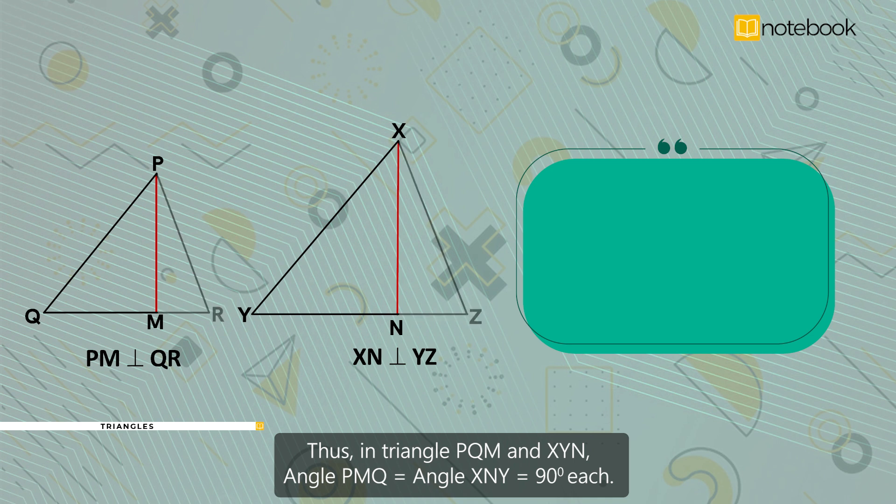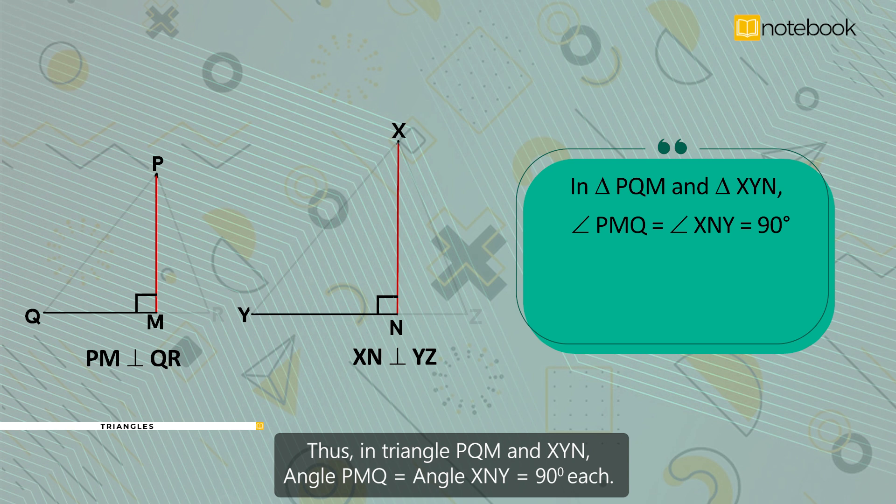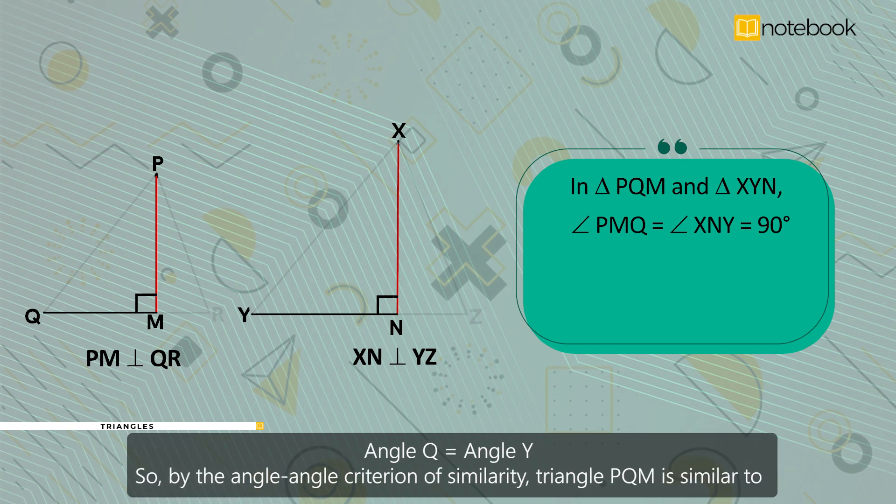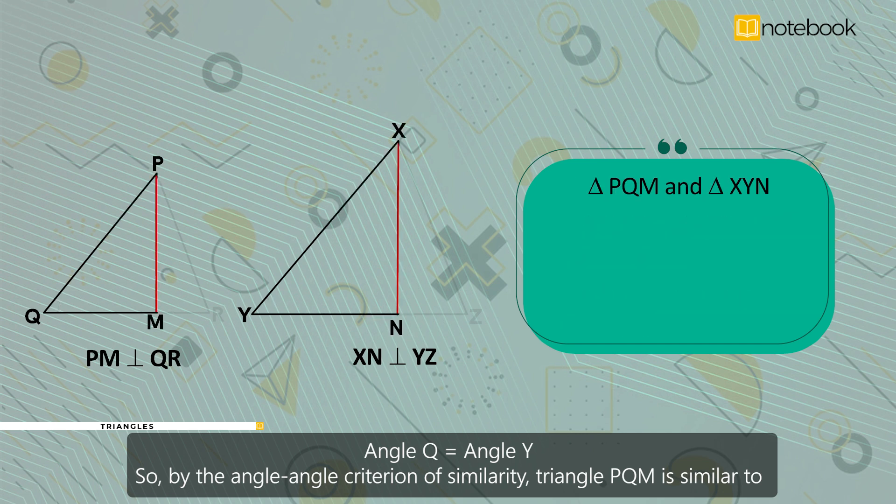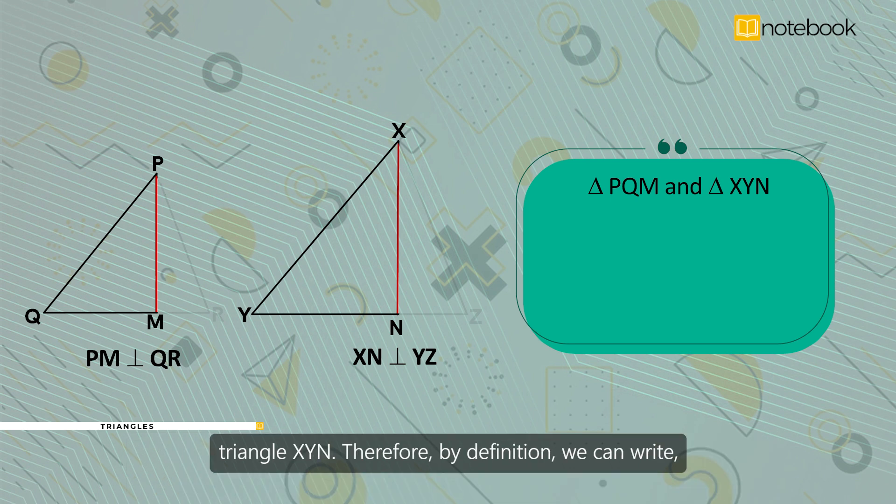Thus, in triangle PQM and XYN, angle PMQ is equal to angle XNY is equal to 90 degrees each. Angle Q is equal to angle Y. So, by the angle-angle criterion of similarity, triangle PQM is similar to triangle XYN.